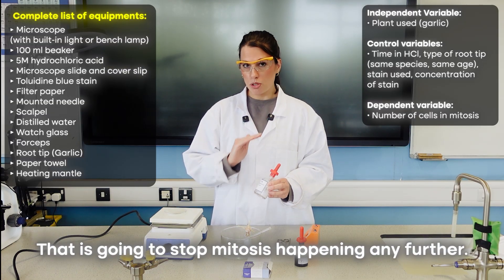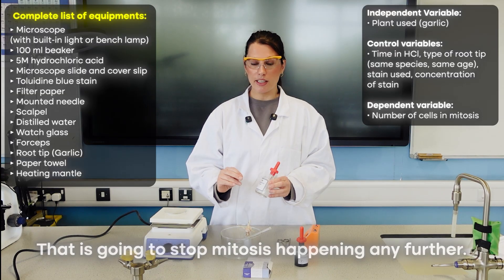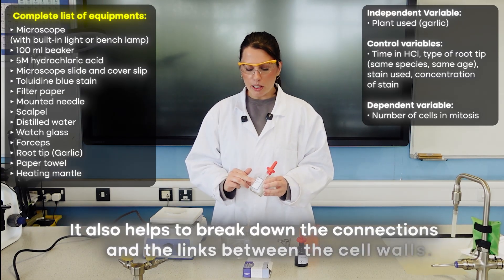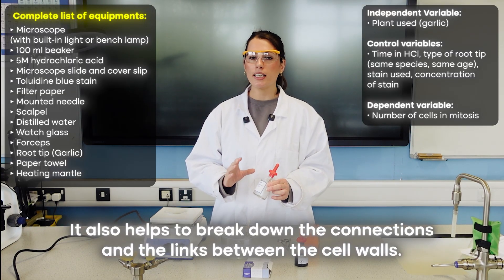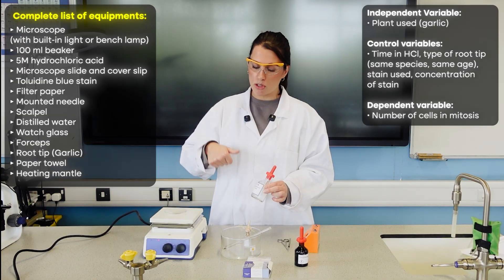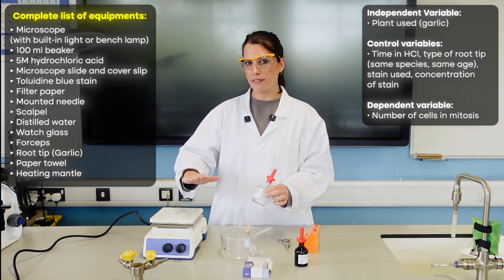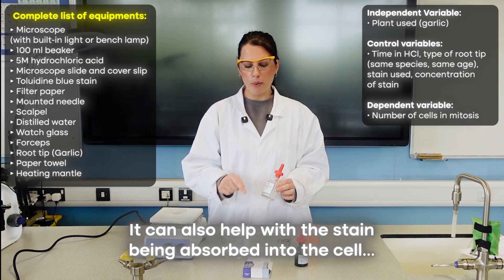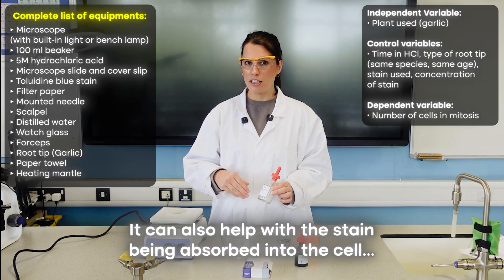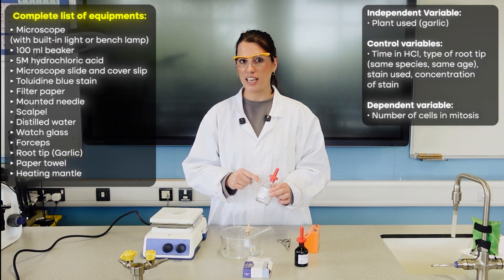It also helps to break down the connections and links between the cell walls so that when we squash it, we get a single layer of cells. And it can also help with the stain being absorbed into the cell and the chromosomes getting stained.